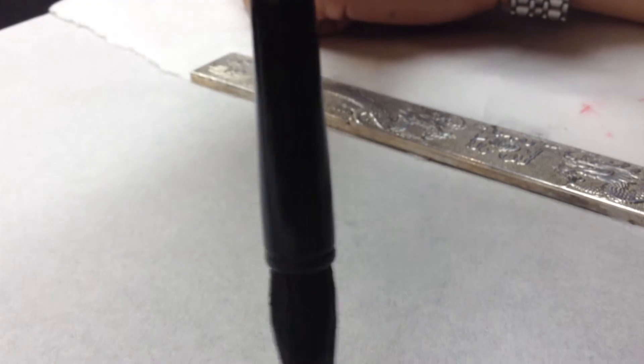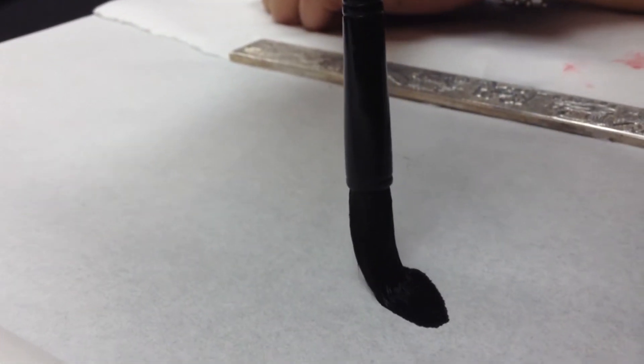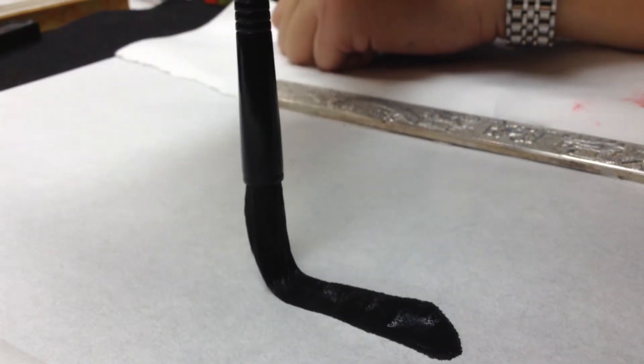Essentially every stroke, whether you're writing calligraphy or whether you're doing a Chinese painting, has a beginning and an end. I'll demonstrate with this stroke. It's called a hen. This is the first stroke I learned how to write when I was writing calligraphy.